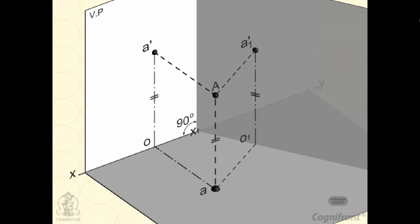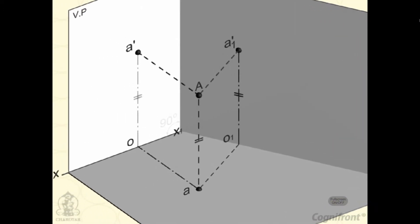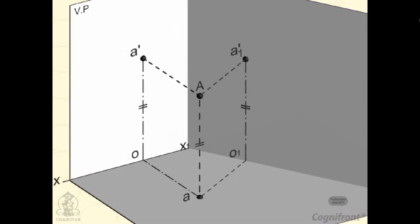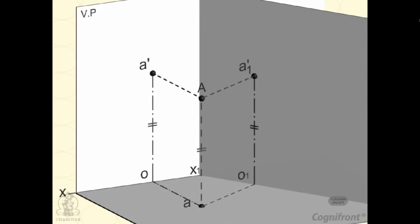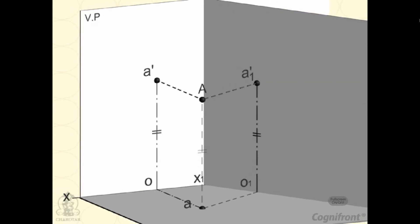A dash and A are respectively the front view and the top view of the point A. A dash 1 is the auxiliary front view obtained by drawing a projection A, A dash 1 perpendicular to the AVP. It can be clearly seen that A dash 1 O1, the distance of the auxiliary front view A dash 1 from X1, Y1, is equal to A dash O — the distance of the front view A dash from XY — which equals AA, the distance of the point A from the HP.